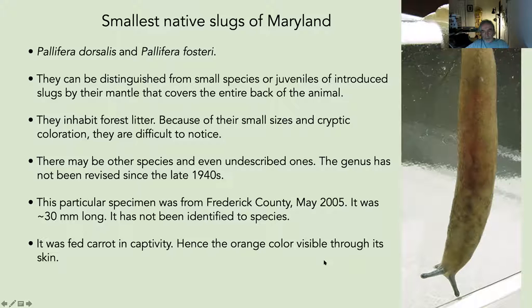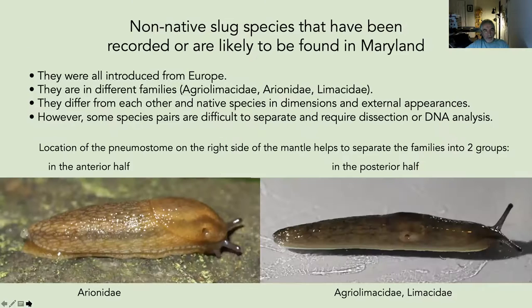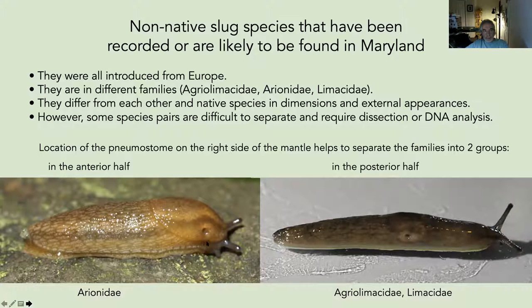This Pallifera specimen was only about 30 millimeters long — the orange coloration visible through the mantle was due to the carrot I had fed it. Now for the non-native slugs, all introduced from Europe, in the families Agriolimacidae, Arionidae, and Limacidae. They differ from native species in dimensions and external appearance. One way to separate the families: if the pneumostome is in the anterior half, the slug is in family Arionidae; if posterior, it's in one of the other families.